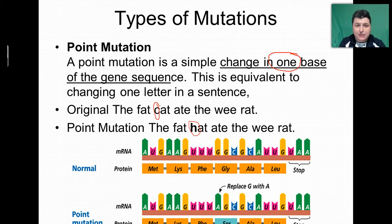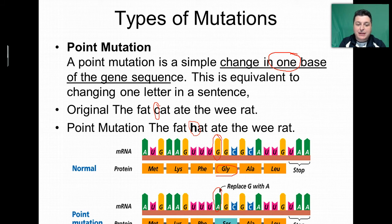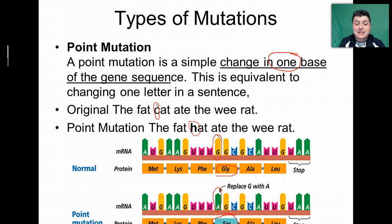Our sentence would now read, 'The fat hat ate the wee rat' — a very different message. The same thing happens when we change a single base in a point mutation. If we changed a G in DNA to an A, that's going to alter the triplet code that codes for a particular amino acid. So instead of getting glycine, we get serine. Serine, being chemically different from glycine, can result in a different folding of the final protein, which gives us a very different protein — perhaps one that does not work.